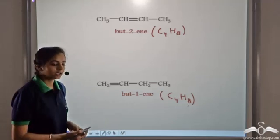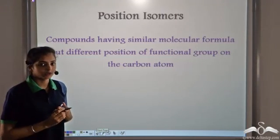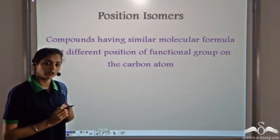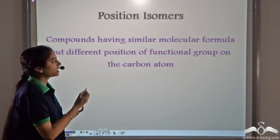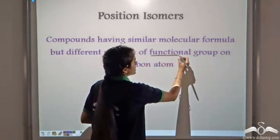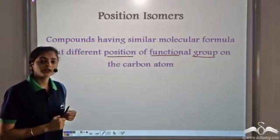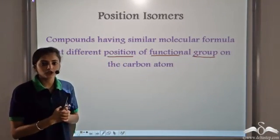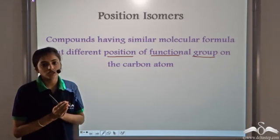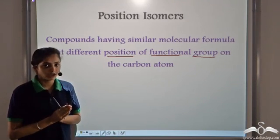Such organic compounds are known as position isomers. Position isomers are compounds having the same molecular formula but the position of the functional group varies. Whenever there is a difference in the position of the functional group for compounds having the same molecular formula, such isomers are known as position isomers.